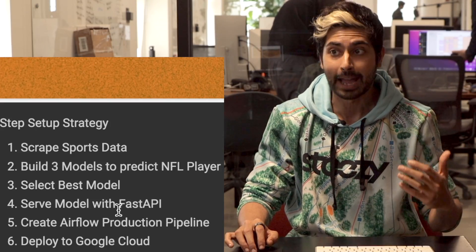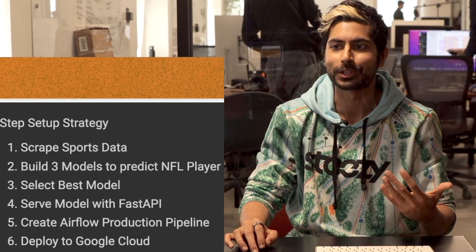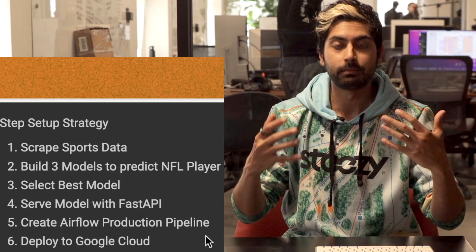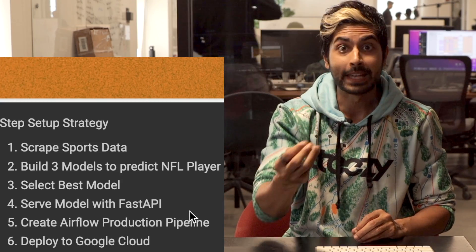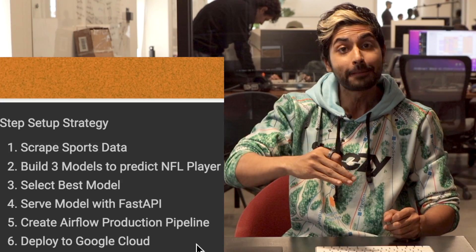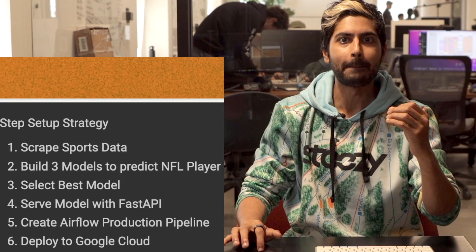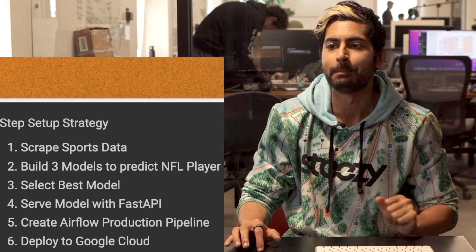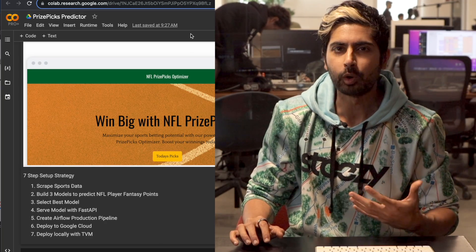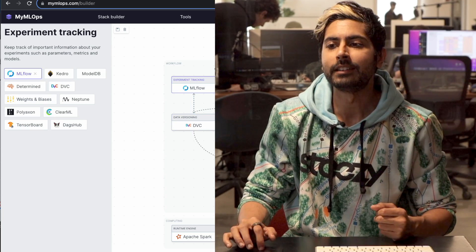In the meantime, let's go through this six-step process. The first step is to scrape real-time sports data from the web. The next step is to build three models to predict the NFL player's fantasy point score given all these features, and the one with the highest fantasy point score is the one we pick — that changes every day for daily fantasy sports. Once all these models are trained, we pick the best model. We could use this model on our local machine, but it would be really cool to orchestrate an entire machine learning pipeline to serve this publicly.